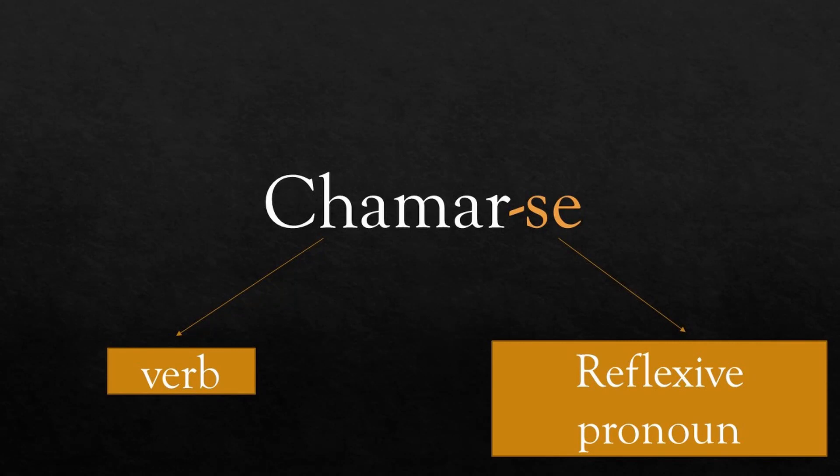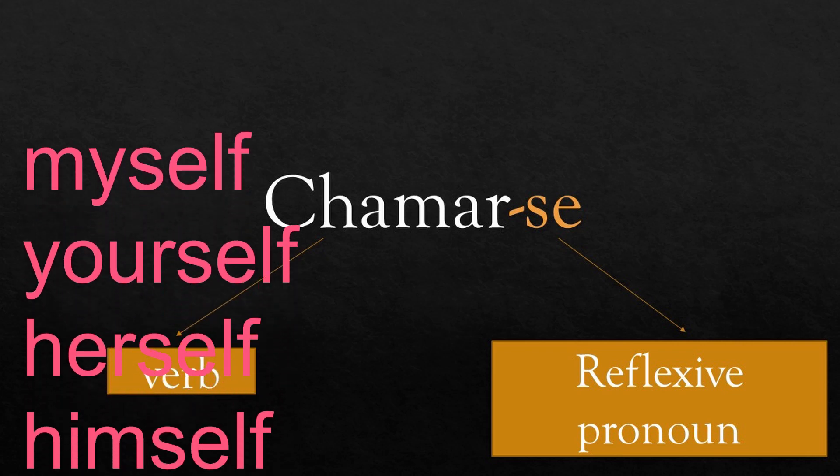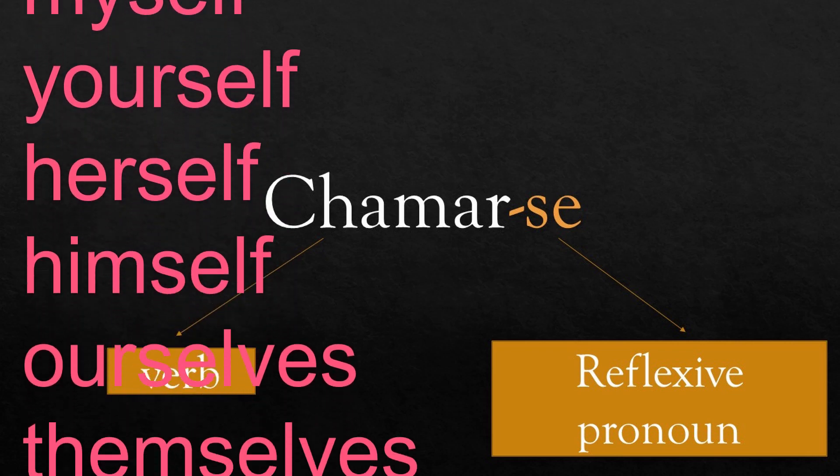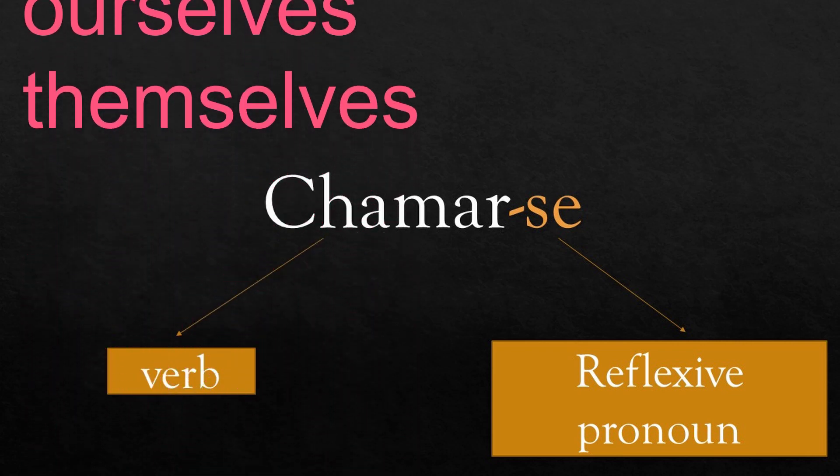Reflexive verbs are used when the action is something one does to oneself. Reflexive verbs consist of a verb and a reflexive pronoun. In this case the verb is chamar and the reflexive pronoun is se — chamar-se. The reflexive pronoun can be translated into English as myself, yourself, herself, himself, ourselves, and themselves.